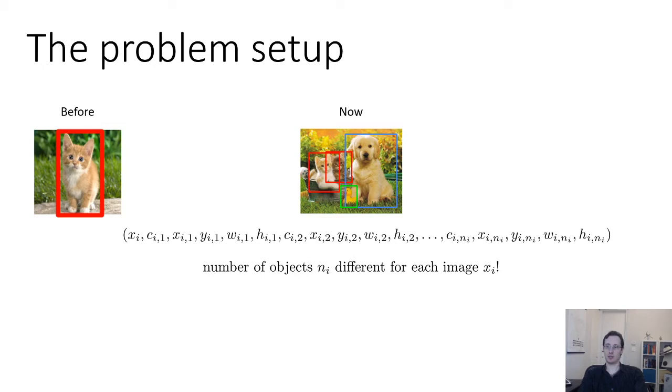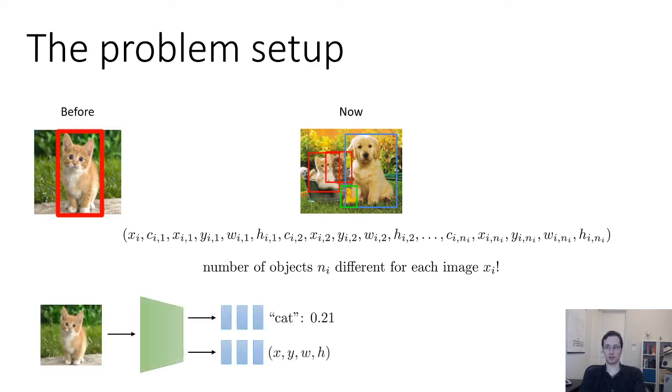Okay, so right off the bat one problem that we might have with this is that we need our model to output a variable number of things. So we could imagine just like before having a network that takes in the image and outputs a category and a bounding box, but how do we output multiple categories and multiple bounding boxes especially when the number is going to be variable? That seems a little tricky.